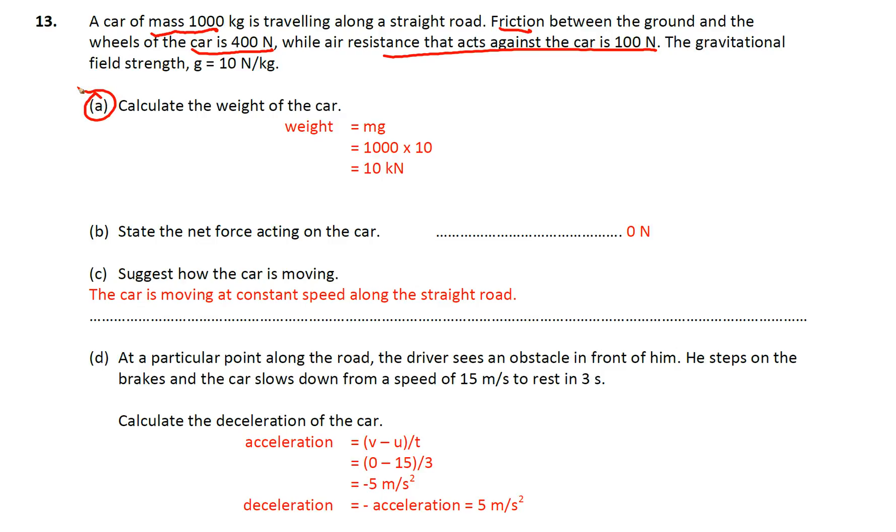Calculate the weight of the car. So please remember for weight, the formula is W equals to mg. Mass is 1000 and the gravity is 10. So the weight is actually 10,000 newton, or you can write it as 10 kilonewton.